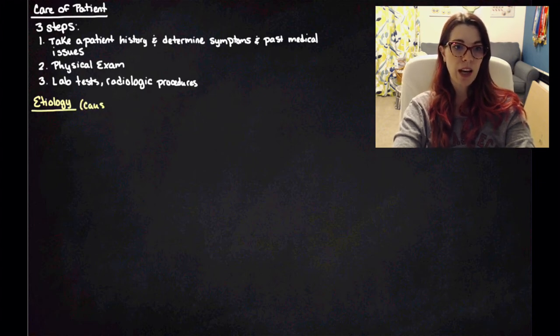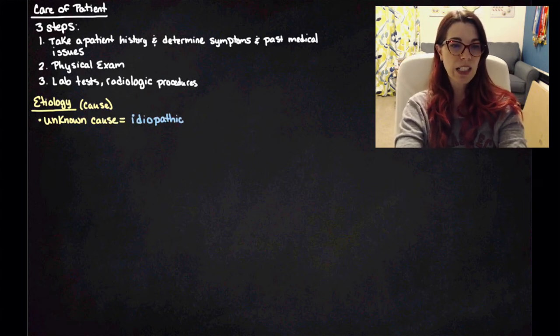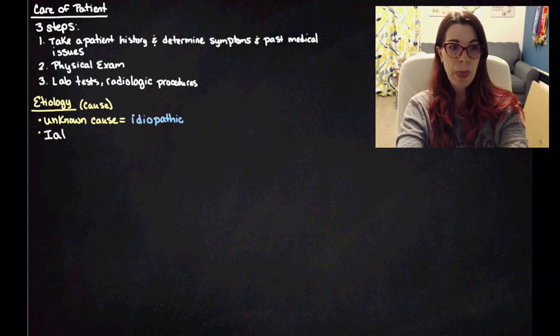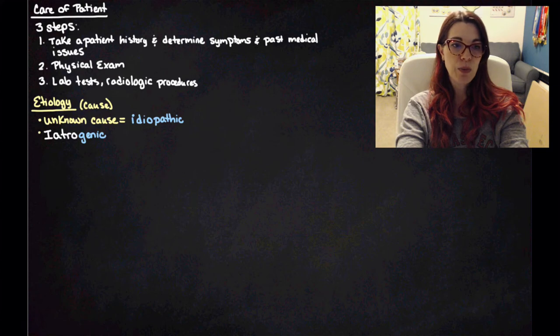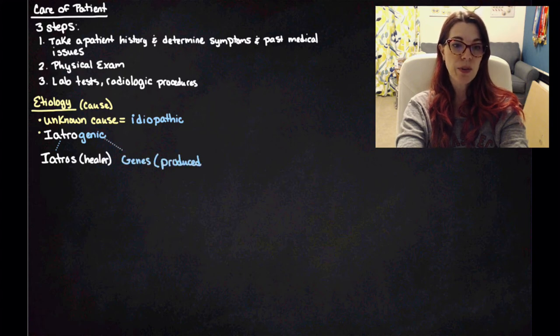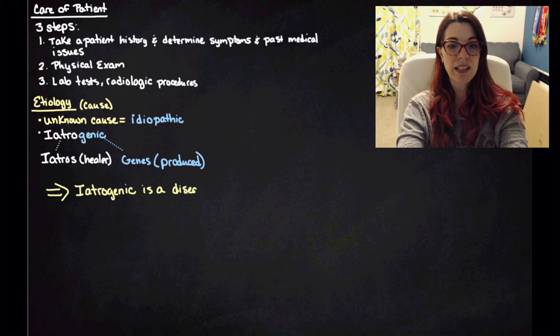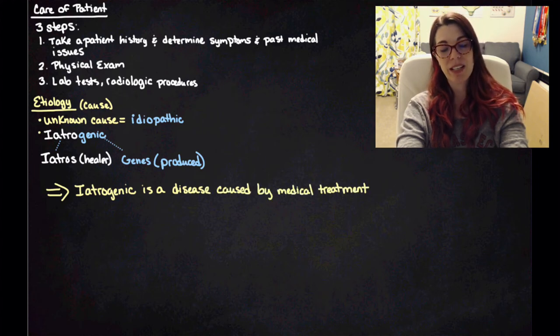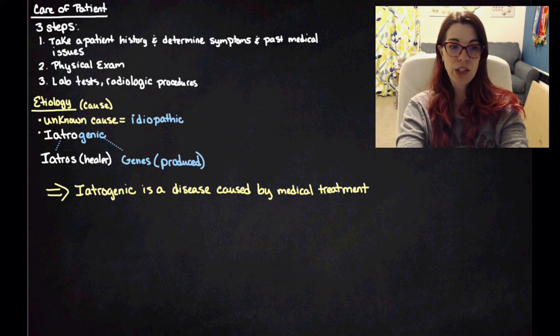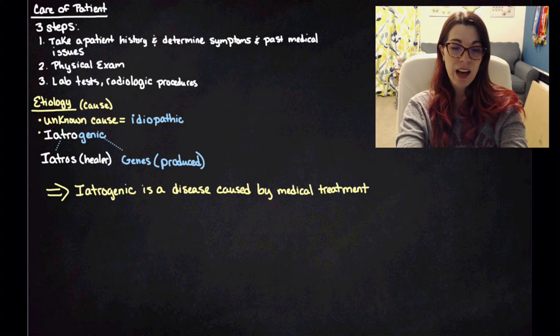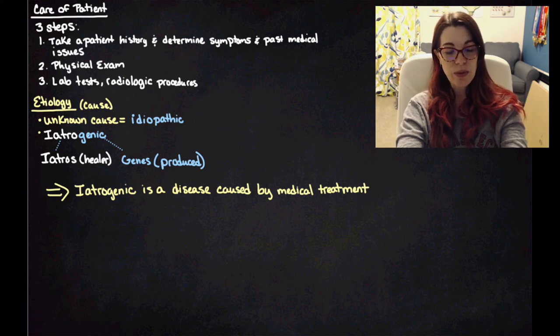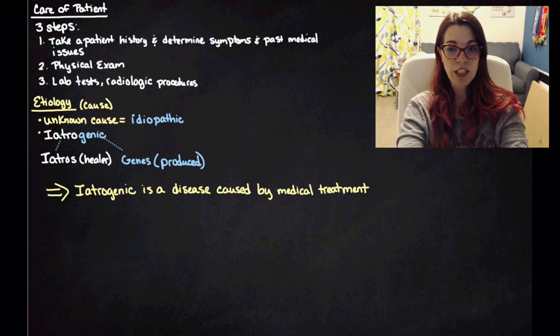Etiology, we've talked about, and that's the cause of the disease. So sometimes disease causes are unknown. And in those cases, we say that those diseases are idiopathic. And then sometimes diseases are what we call iatrogenic. Iatro comes from iatros, which means healer. Genic comes from genus, which is produced. So iatrogenic is a disease that is caused by medical treatment. So there are some treatments that will actually lead to specific diseases as a side effect. But if the side effect is not as bad as the disease that is being treated, then the hospital just goes with that. So iatrogenic diseases are diseases caused by medical treatment.